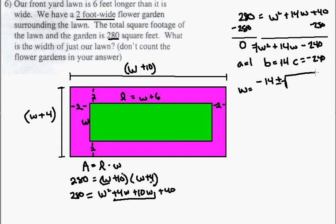So the width is equal to negative 14, plus or minus the square root of 14 squared, minus 4, which is the same as plus negative 4, times 1, times negative 240.